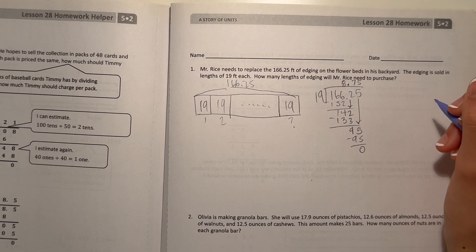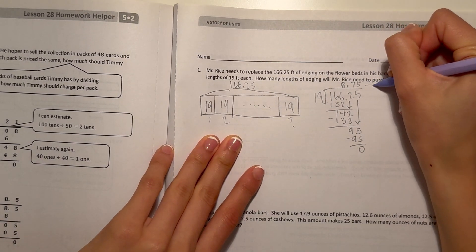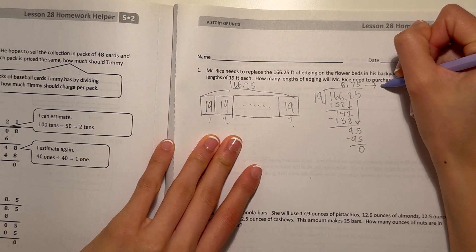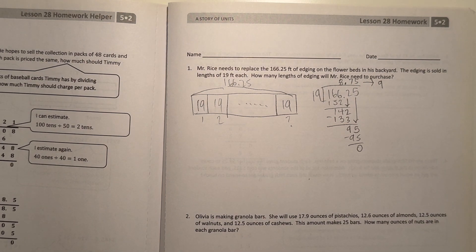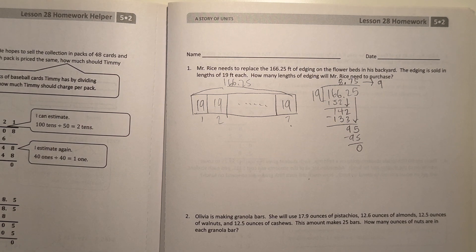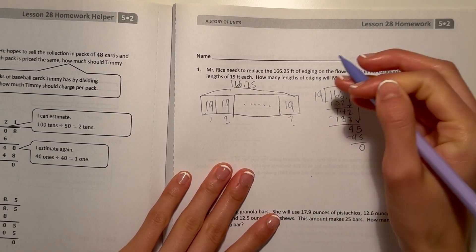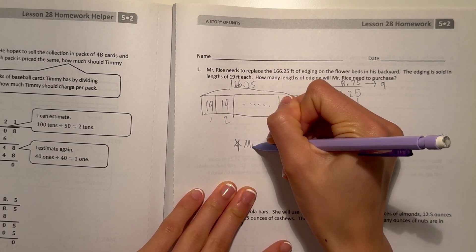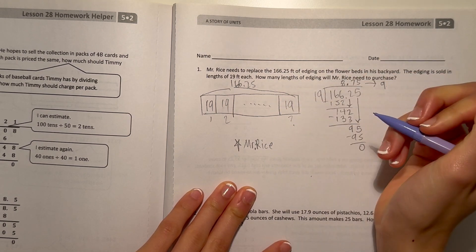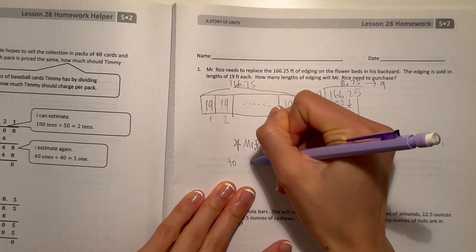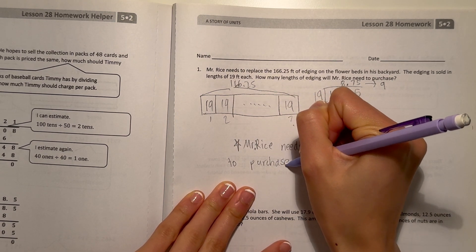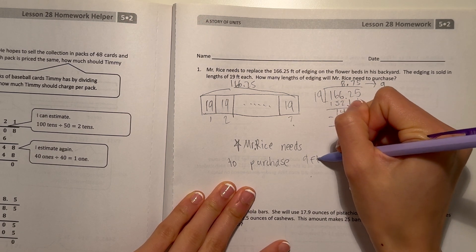That means Mr. Rice needs 8.75, but we're going to round it to the next whole number, which is 9. That's because you can't buy 8.75 feet of edging at a store, and 8 is not enough. So Mr. Rice needs to purchase 9 feet of edging.